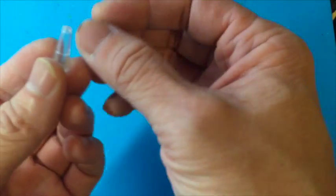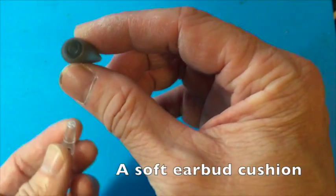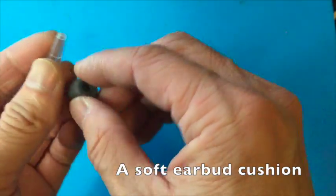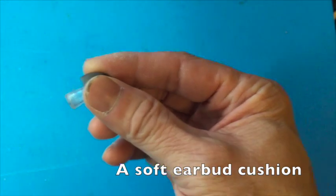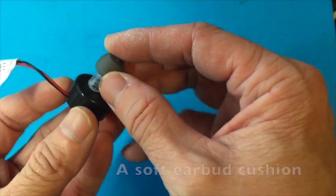To make the earbud easier to wear and more comfortable, we need this earbud cushion. They're made from silicone, rubber-like and very soft, so you can plug it into the tip. And then when you get the whole thing made up, it will be like this.